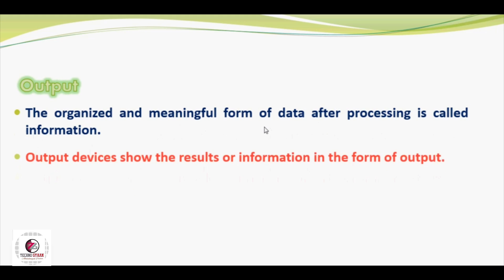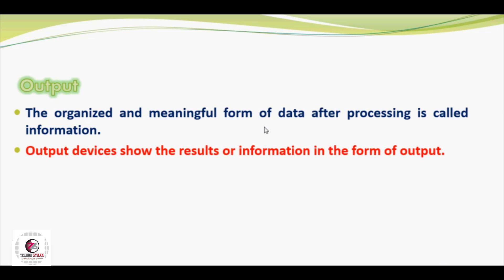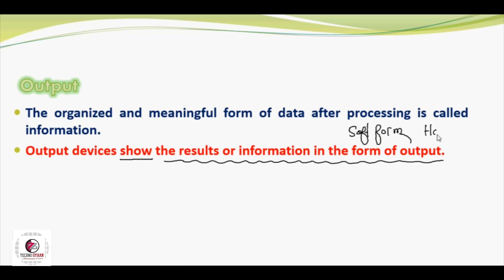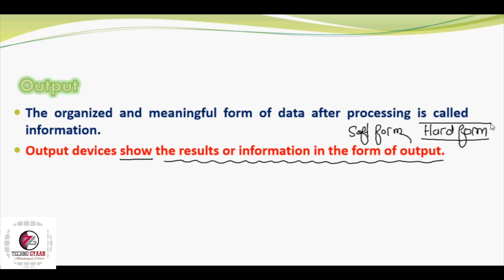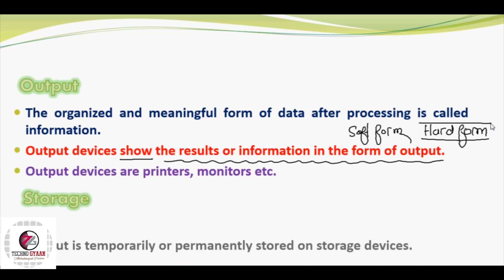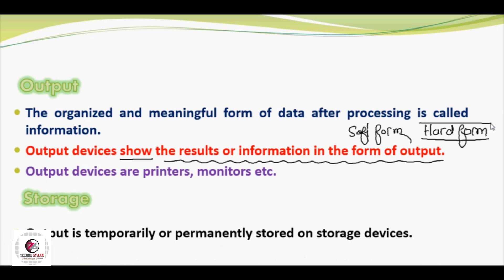The third function is output. The organized and meaningful form of data after processing is called information, and we get this information through output devices like printers and screens. Output devices show the results and information in the form of output. This output can be in soft form — displayed on screen — or in hard form which we can touch, like a printout obtained with the help of a printer. Output devices include printers, monitors, etc. The last function is storage, where we store our information on a temporary and permanent basis so that we can use it in the future.